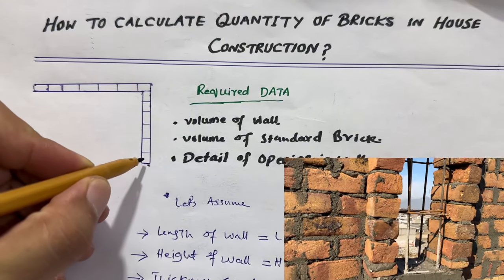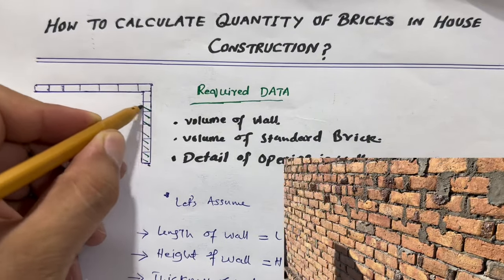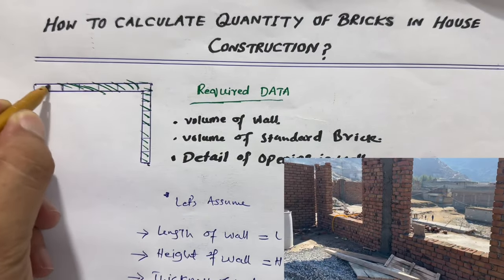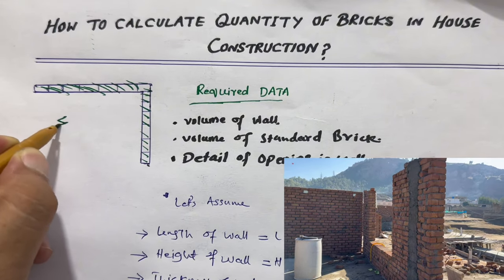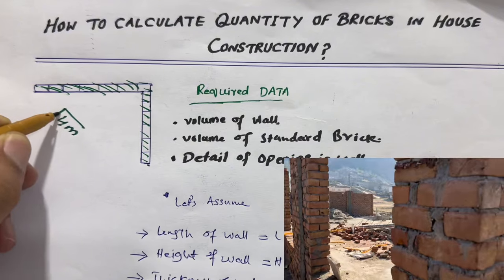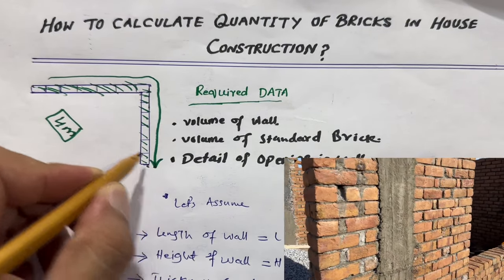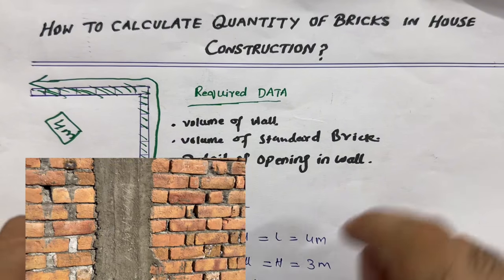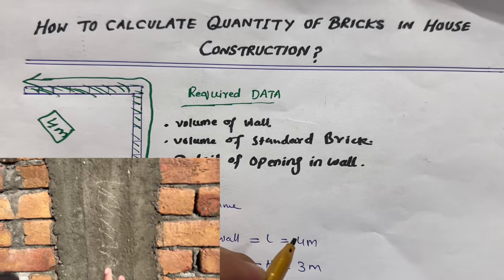You can see this is wall, which parameter you can say, or the length especially here, four meter. This one and this one, this is four meter length.